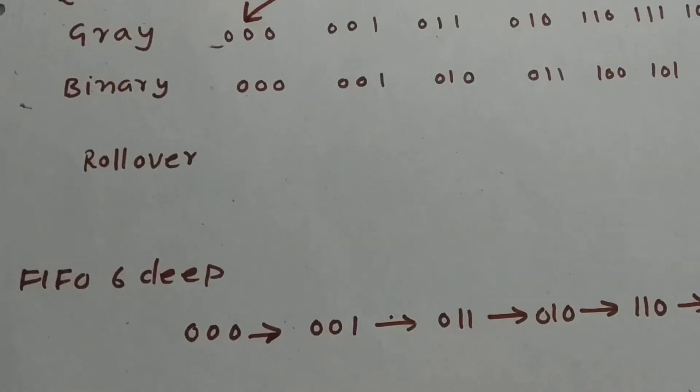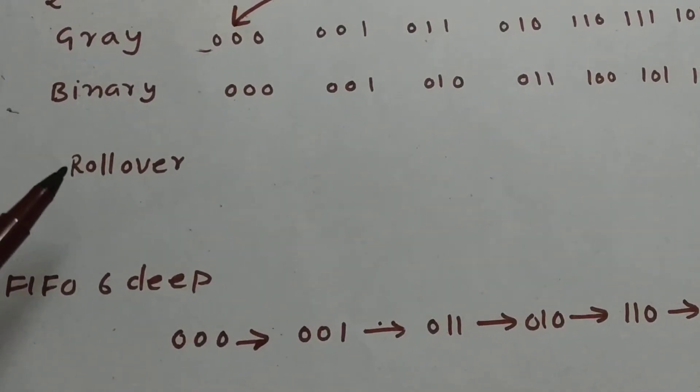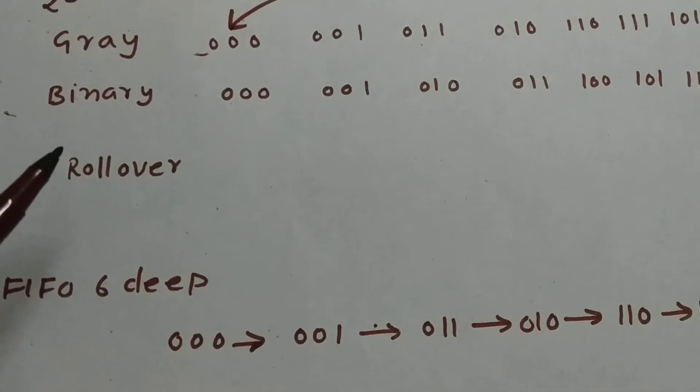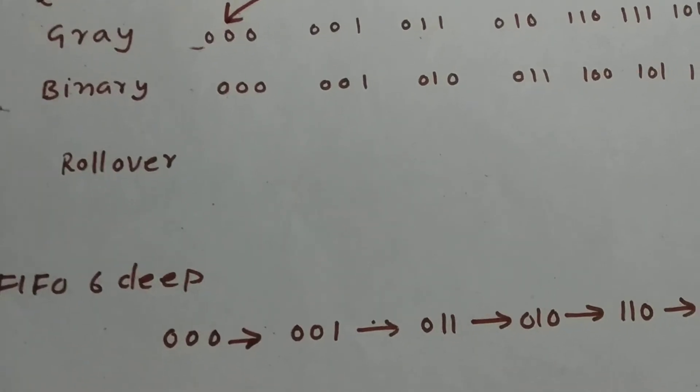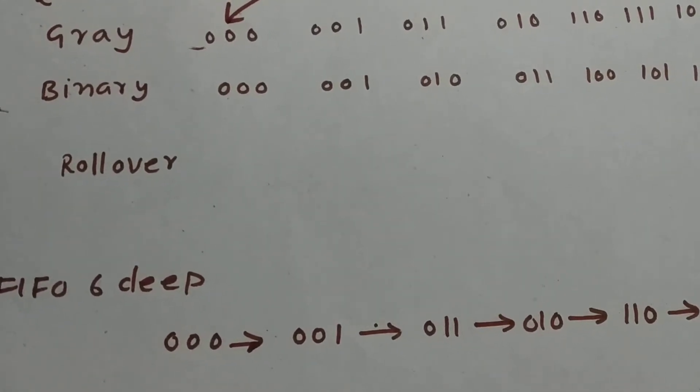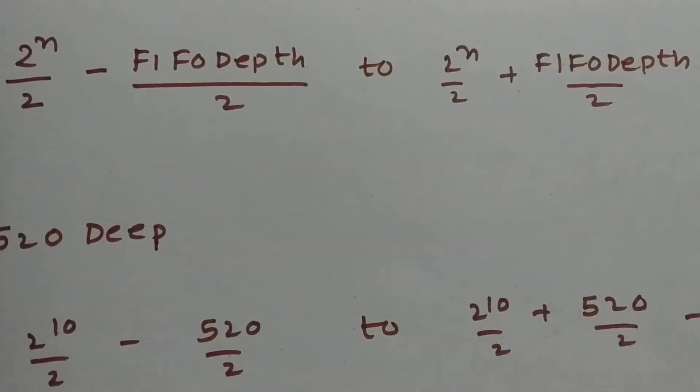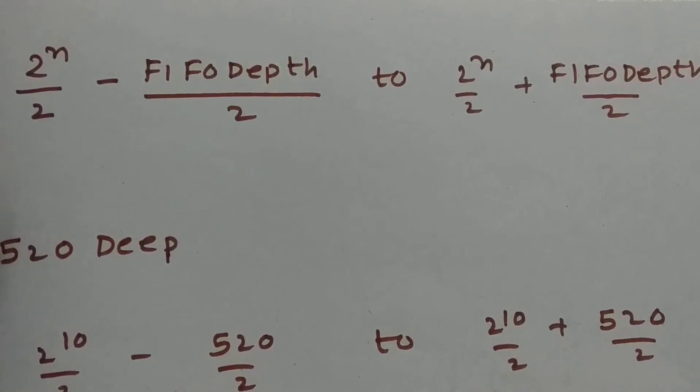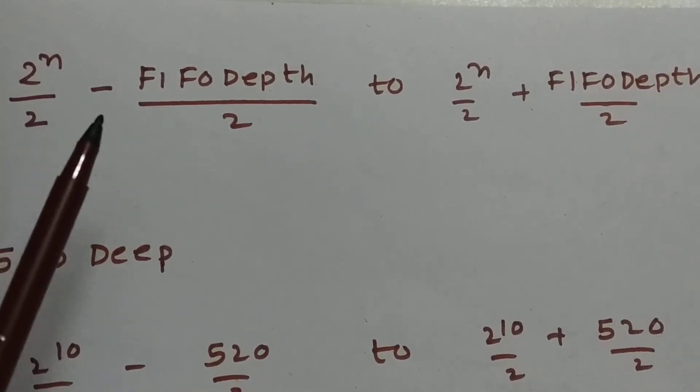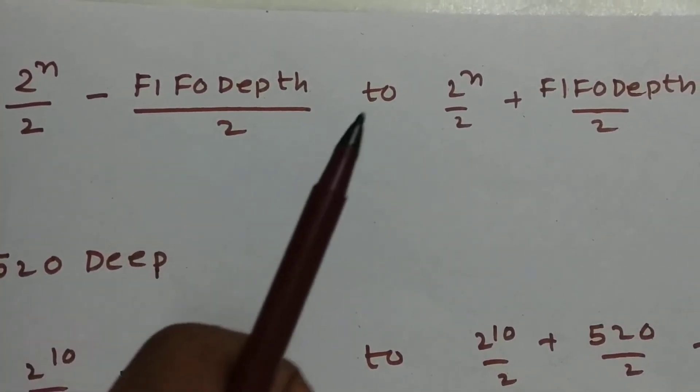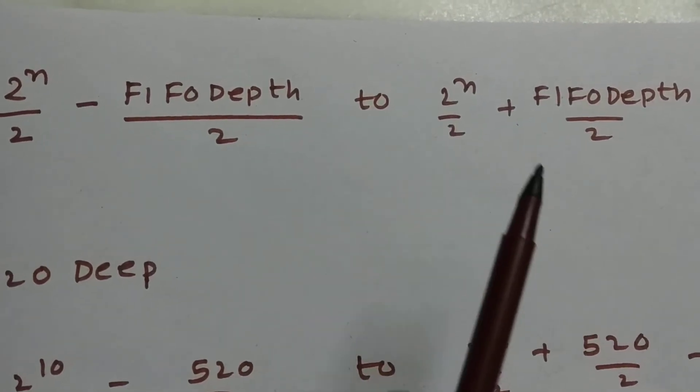So how can we correct this rollover problem? We have a formula where we can reduce this rollover problem of synchronization. The formula is 2 power n by 2 minus FIFO depth by 2 to 2 power n by 2 plus FIFO depth by 2.